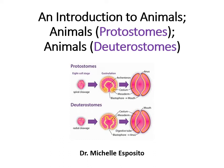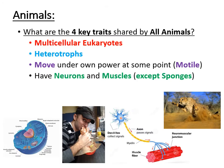Hi everyone and welcome to today's lecture, which is all about animals. First we'll do a general introduction to animals, and then we'll go over some details about protostomes versus deuterostomes. The first thing I want to point out is: what actually makes an animal an animal? There are four key traits shared by all animals — basically these four traits make something considered an animal.